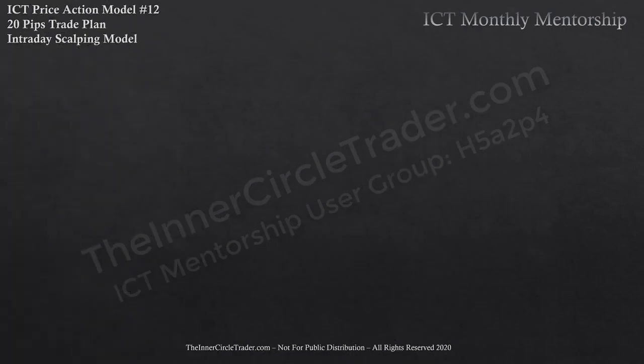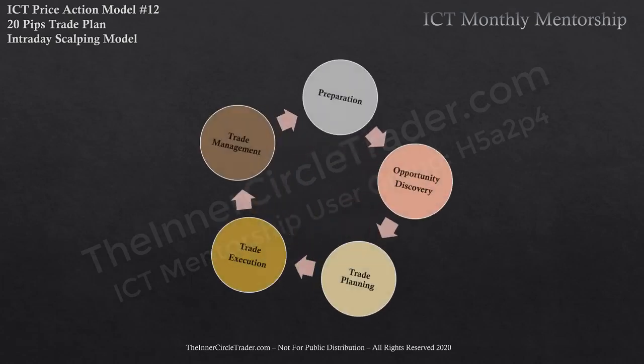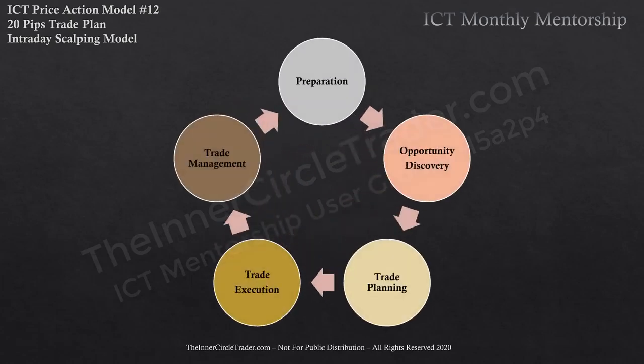Again, this is ICT Price Action Model Number 12 — a 20-pip per trade plan anchored on an intraday scalping model. Like every trading plan, we use the five stages of trade plan development: preparation, opportunity discovery, trade planning, trade execution, and trade management.